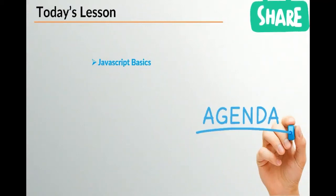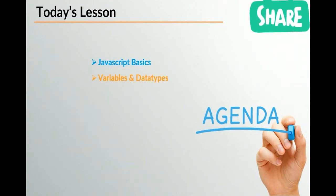Our basic interface is writing JavaScript and how it works inside our web page. We're going to look at some fundamentals of actual programming — namely, variables and data types. What is a variable and what is a data type, and how can we use them inside JavaScript?